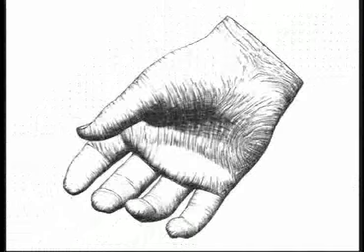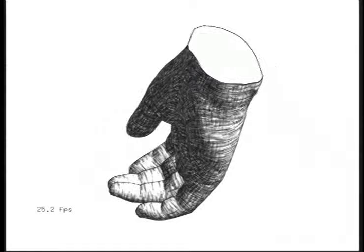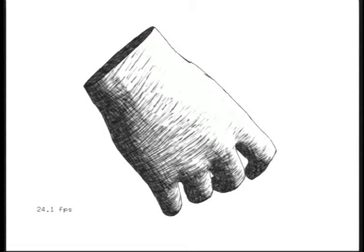We're able to render at interactive frame rates by exploiting multi-texturing hardware to blend between images in the tonal art map. Here we show animating both the model and the light. Using an NVIDIA GeForce 2 graphics card, we get roughly 25 frames per second, or 32 if we don't draw silhouettes.